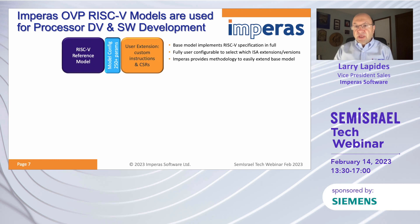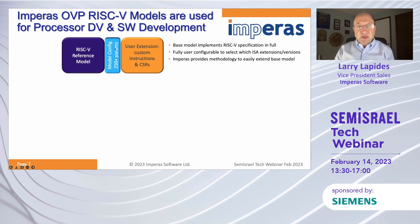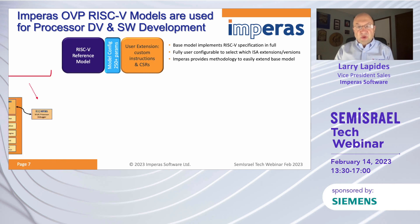Let's get into the model. This is the basic structure: there is a base reference model implementing the full RISC-V specification, which can be configured for different extensions and versions. Then there is an extension library for custom instructions and CSRs.